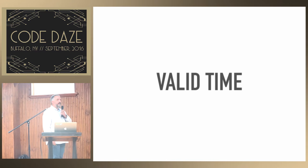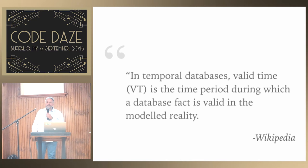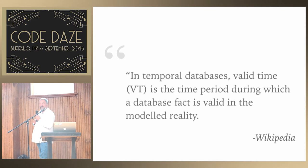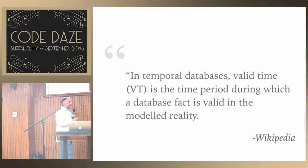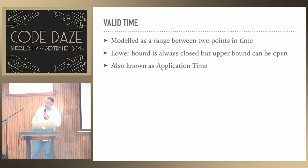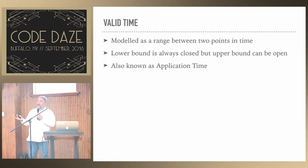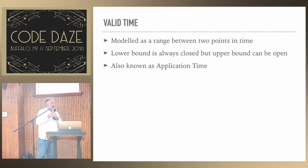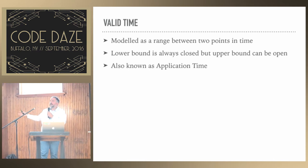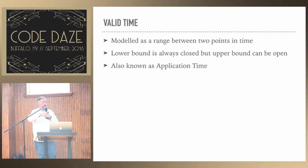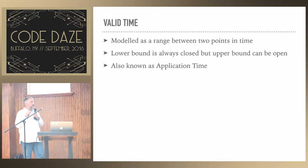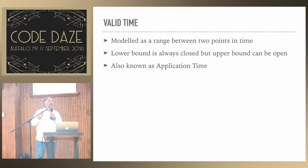The next aspect is something a little trickier, and that's called valid time. In temporal databases, valid time is the time period during which a database fact is valid in the model of reality — a fact being a single row. Valid time is always modeled as a range between two points in time: beginning and end. The lower bound is always closed. If we currently believe it to be true, the valid time has no upper bound. However, the closing time can also be in the future — we can say this thing is going to cease to be true at a certain point in the future. Valid time allows us to model this. It's also called application time, and why that is will become important later.